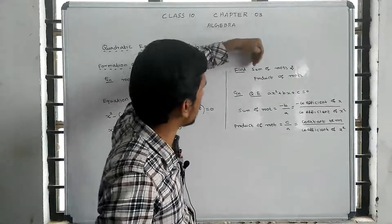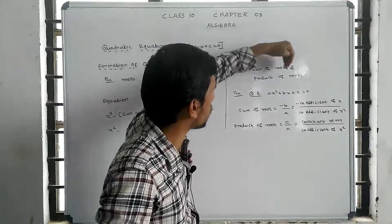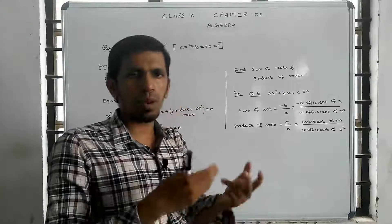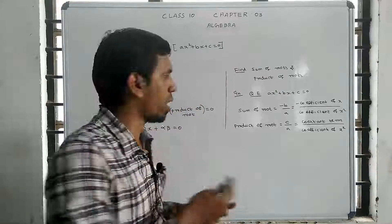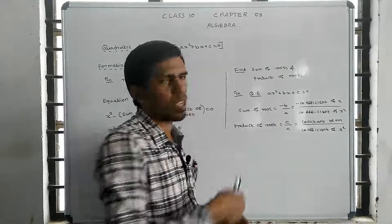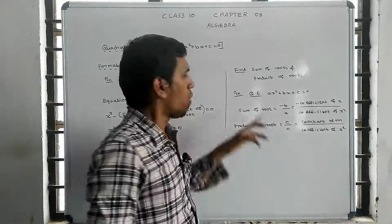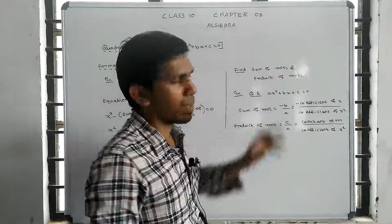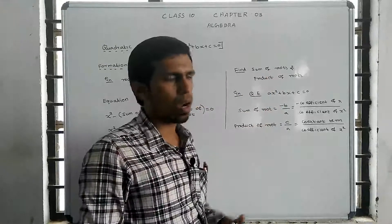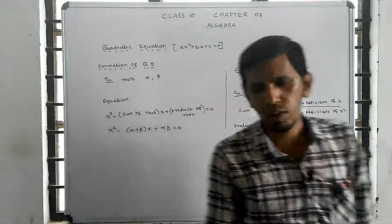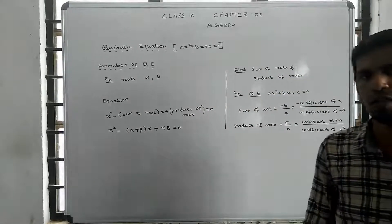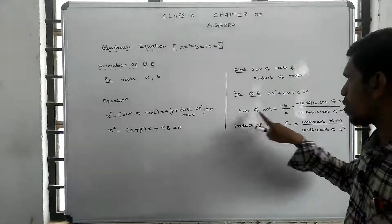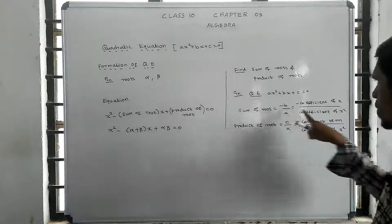So we need to find the sum of the roots and the product of the roots. The sum of the roots is equal to 1 in this example.